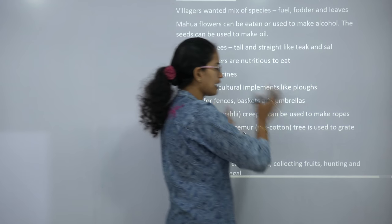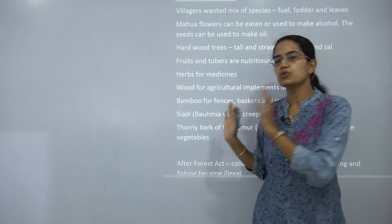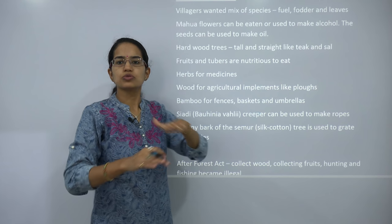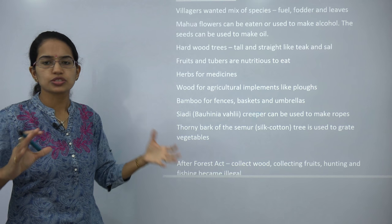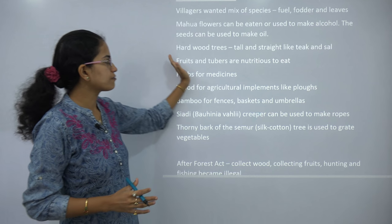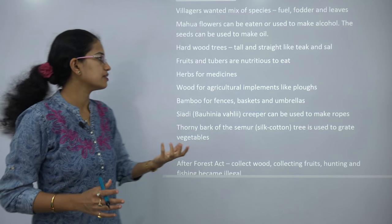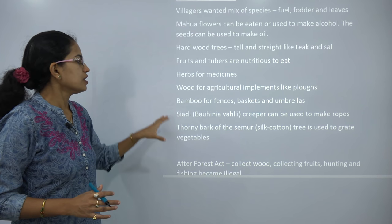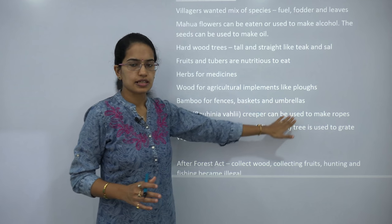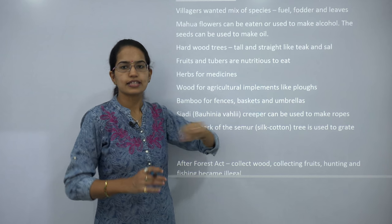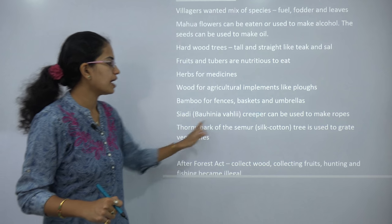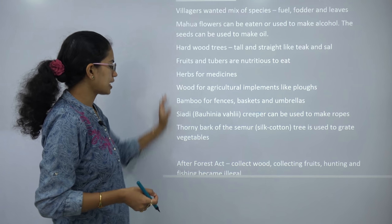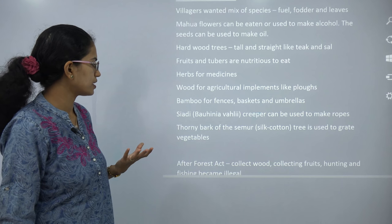The villagers or tribal adivasis, on the other hand, were using forest resources for numerous purposes. Hardwood trees like teak and sal were used for sleepers, infrastructure, tables, chairs, and furniture. Fruits and tubers were used for nutritional value; herbs were used for medicinal value. Wood was used in agricultural implements; bamboo was used for fencing, baskets, and umbrellas. Sadia, a creeper, was used to make strong ropes. The bark of semur was used to grate or tie vegetables together.